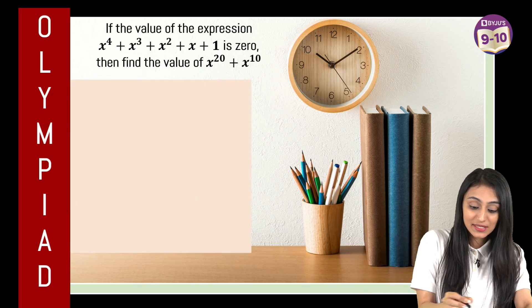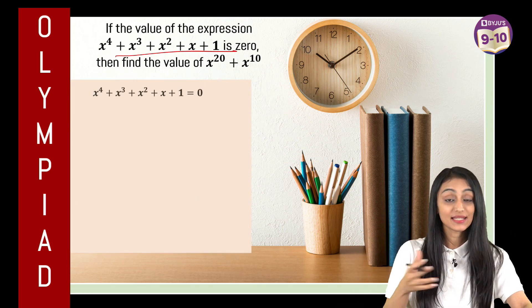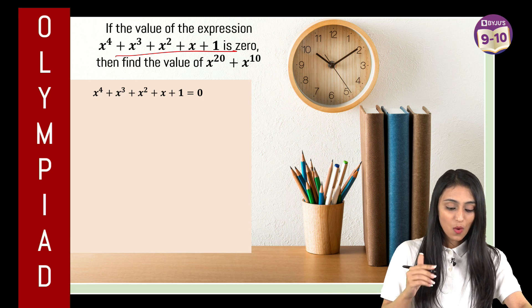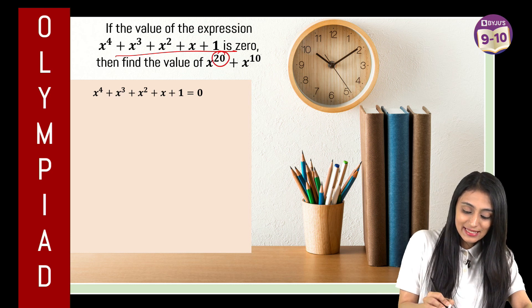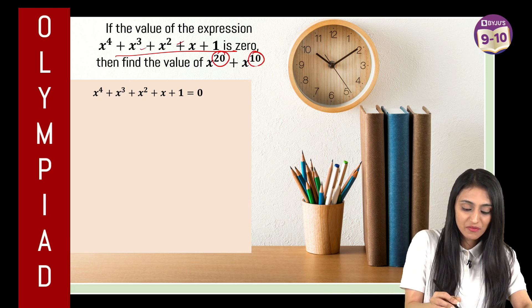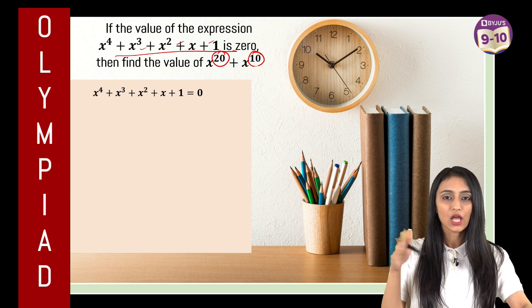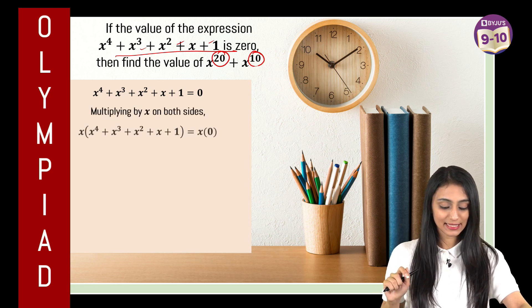So what I'll do here is, first of all, it is given that this equals 0. So let's equate this to 0. Now this is x to the power 20, this is x to the power 10. Here powers are very small, some are odd, some are even. So what I'll do is multiply x on both the sides.